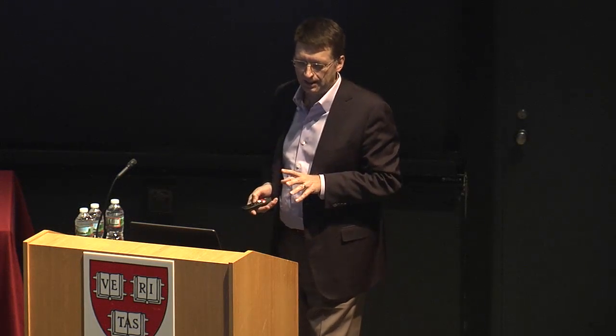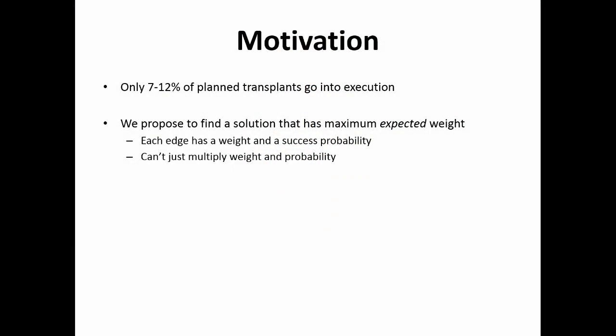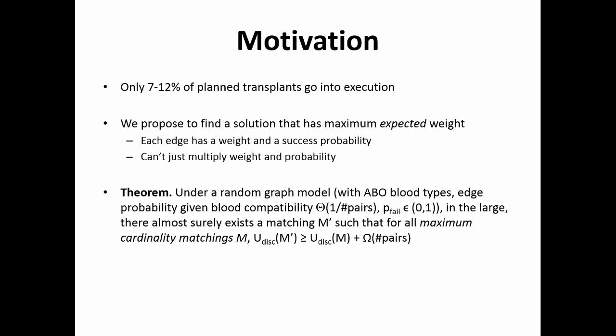When I say 90% of cycles fail, it means that in 90% of cases at least one edge in the cycle fails. So we're doing sophisticated optimization under a lot of uncertainty where many graph edges are fake. Instead of maximizing sum of weights in the solution, we maximize the expected sum of weights, where each edge has both a weight and a success probability. You can't simply multiply weight by probability because a cycle fails if even one edge fails — that's a homework exercise.